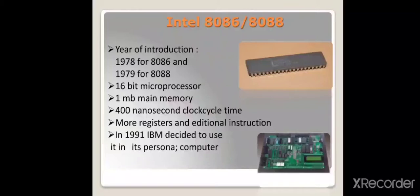Then came the advanced microprocessor age. Intel 8086 was introduced in 1978 and 8088 in 1979. Both were 16-bit microprocessors with 1 MB main memory size and a clock cycle time of 400 nanoseconds.